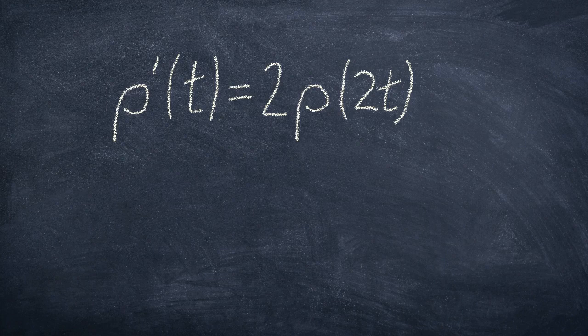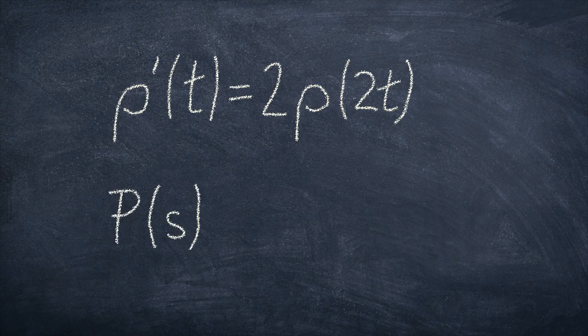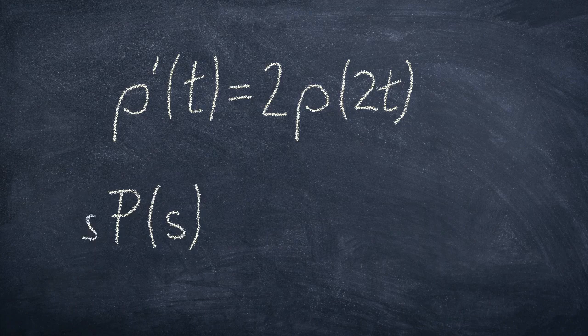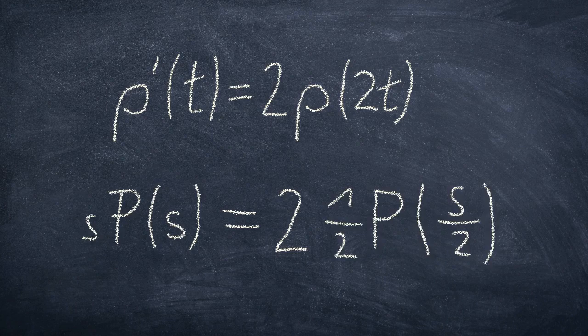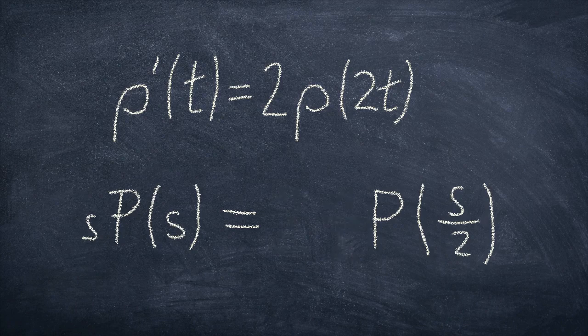So, the core property of the rho function, with the scaling derivative similarity stuff, can directly be translated into Laplace domain. Rho of t becomes capital rho of s, so note that this is a capital rho, not a p. The derivative turns into a multiplication with s. Other side. The 2 in front of rho stays a 2, due to linearity. The 2 inside the argument turns into a half, and also makes a half pop up outside rho, because that's what Wikipedia says. The 2 and the half cancel each other out, and we are left with this. Sweet!